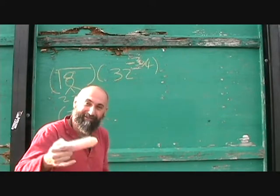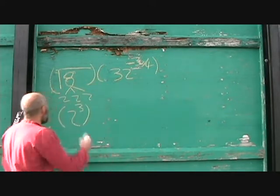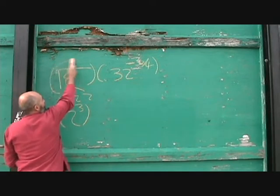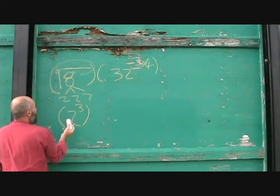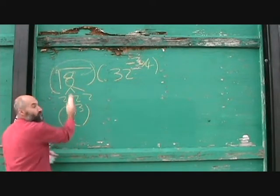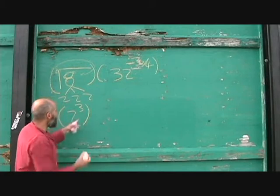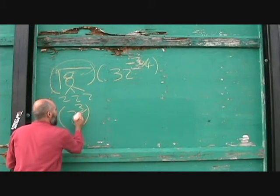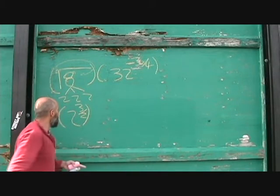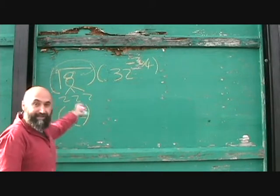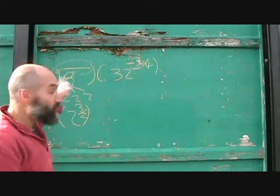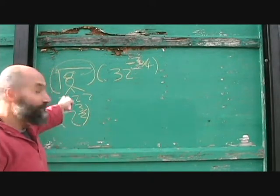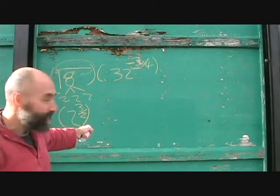The square root symbol — as we talked about before, the 2 goes in the denominator as the power. So the square root of 8 is 2 to the power of 3 over 2. 8 is 2 to the power of 3, so the square root of 8 is 2 to the power of 3 over 2.